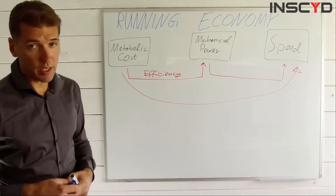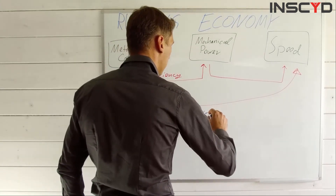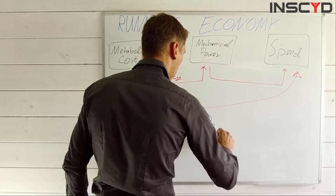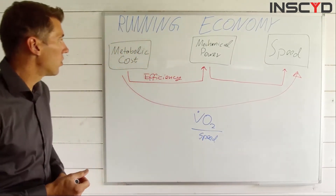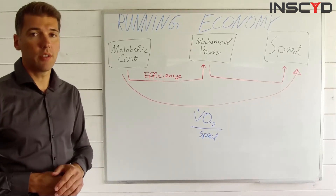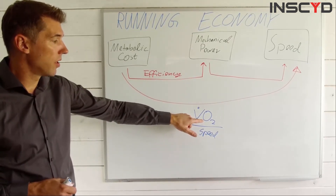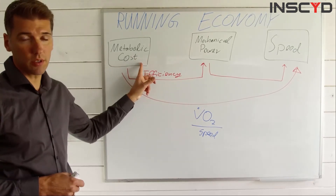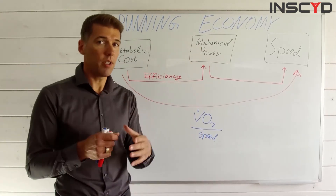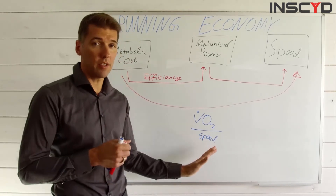How is running economy measured? In most cases, you'll find it expressed as oxygen uptake — VO2 — divided by speed. This is the most common way to express running economy. However, it has some very important shortcomings, basically coming from the fact that VO2 is not metabolic cost. The worst case is when someone takes the raw measured VO2 at the mouthpiece in a lab and simply divides it by running speed.